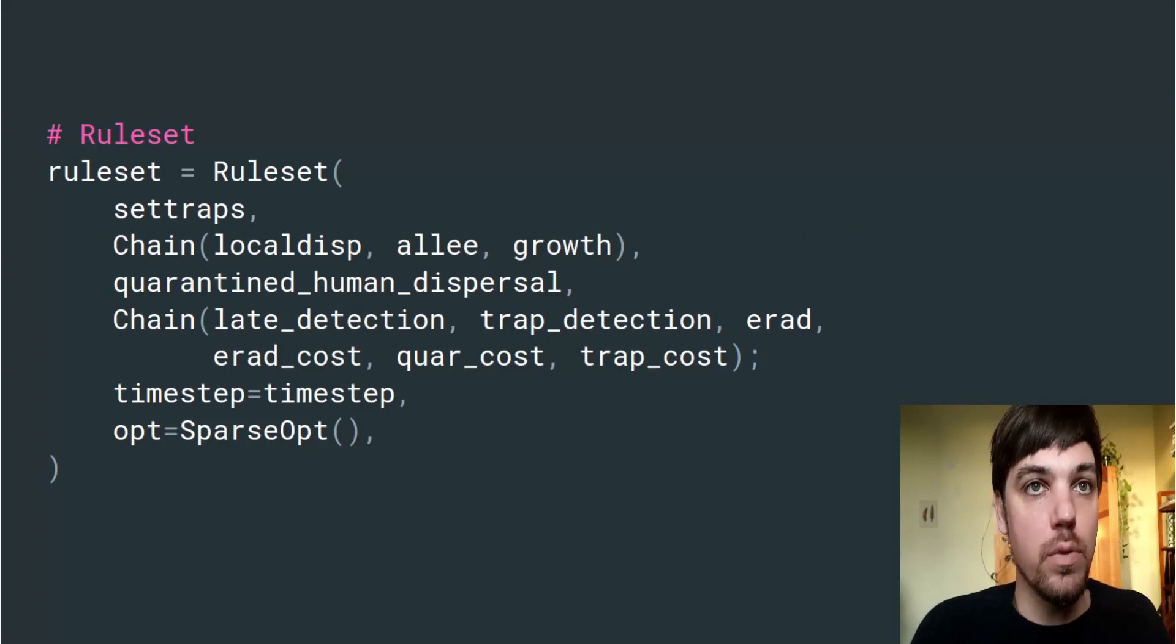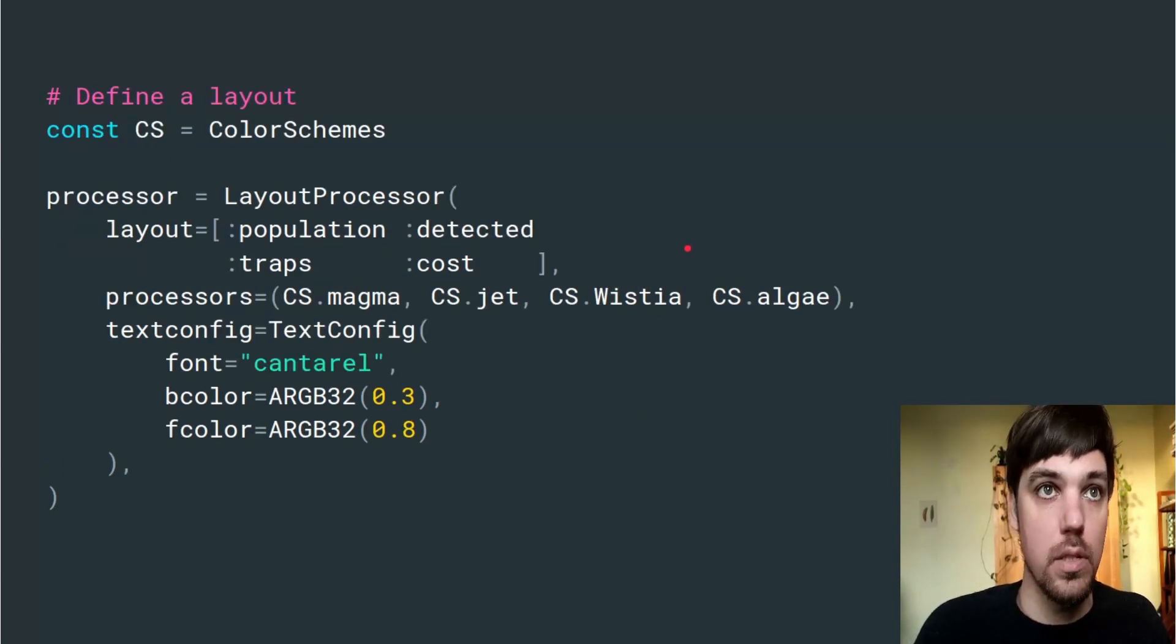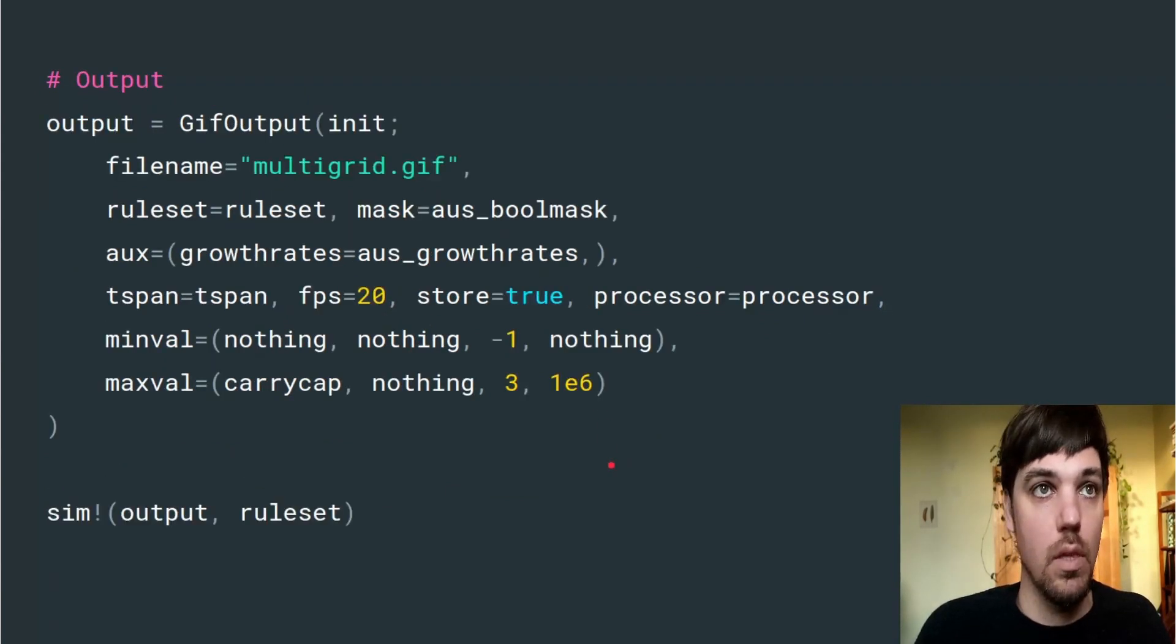We can define the whole rule set with chains of different groups of rules and other flags for the simulation. Define a large layout processor for all four of those grids with four color schemes, a text configuration and a layout in a matrix. Then we can define an output. Here we use a GIF output so the output will be directly written to disk and we can run that.